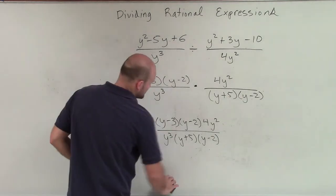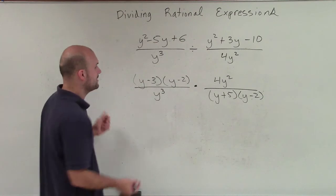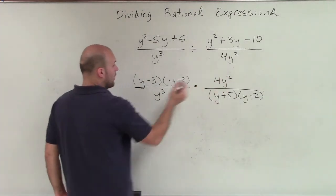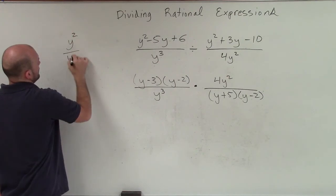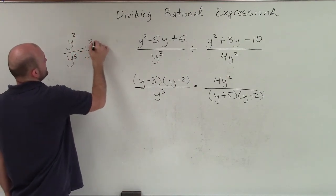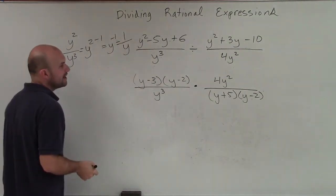So what I'm going to do here, though, is I'm not going to go through all that stuff. I'm just going to kind of look at this and say, all right, if I divide y squared divided by y cubed, that equals y to the 2 minus 1, which equals y to the negative 1, which equals 1 over y, right?